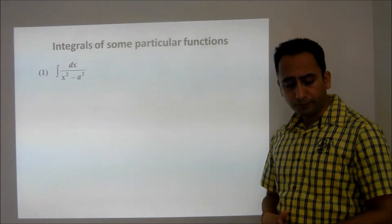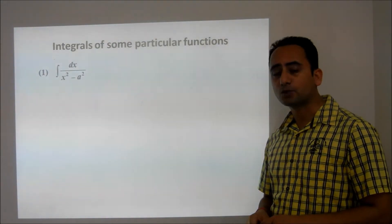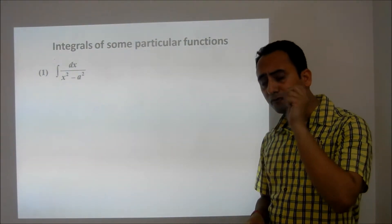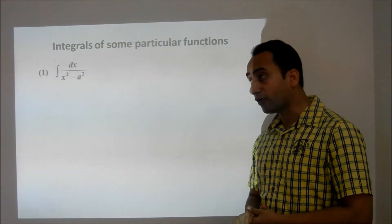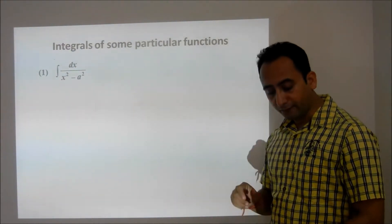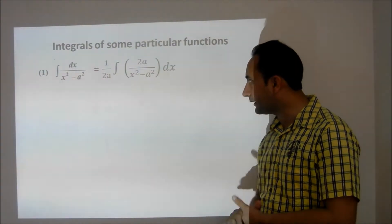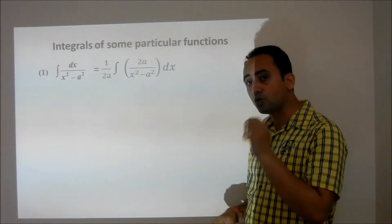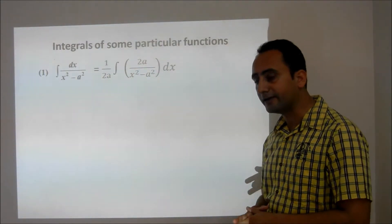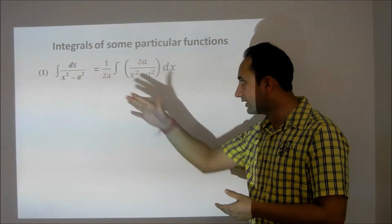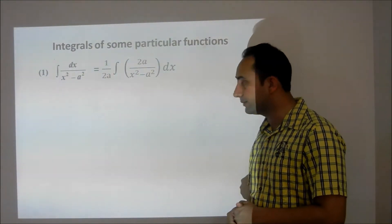First of all, the integral of 1 upon x square minus a square. For this particular integral, I will multiply and divide by 2a. Since 2a is a constant, it can be multiplied as well as divided in an integral. So I have taken 1 upon 2a outside the integral sign and 2a in the numerator.